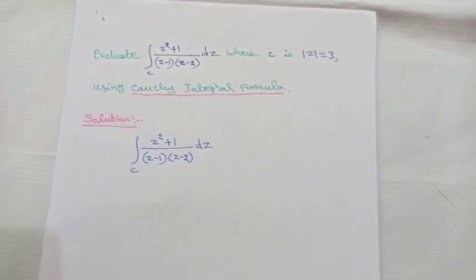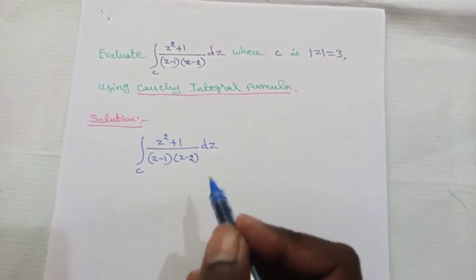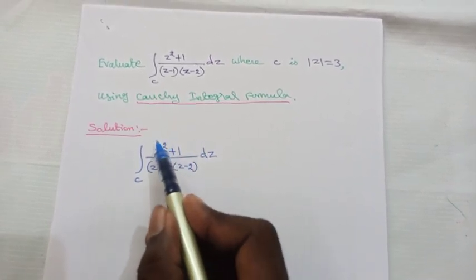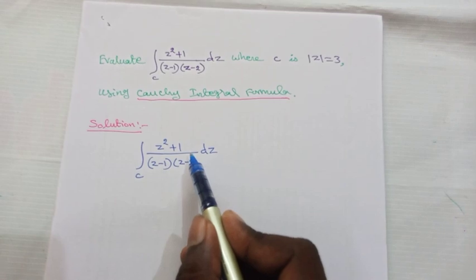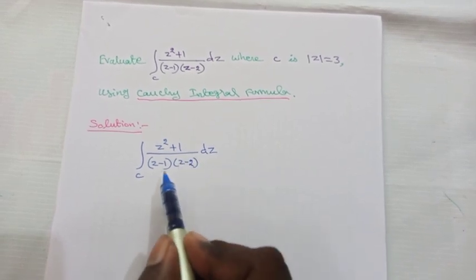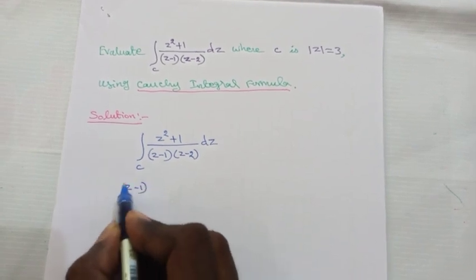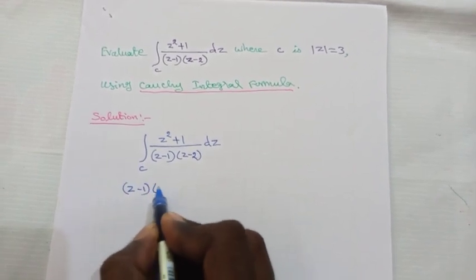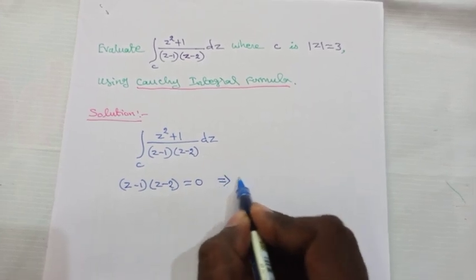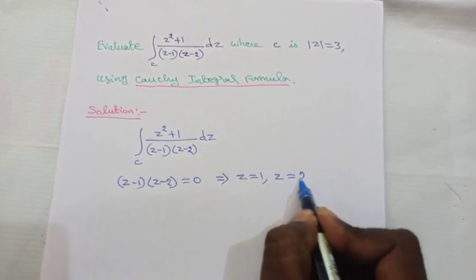To evaluate this integral using the Cauchy integral formula, we first find the singularities of the given function. To find the singularity points, put the denominator equal to 0: (z - 1)(z - 2) = 0, which implies z = 1 and z = 2.